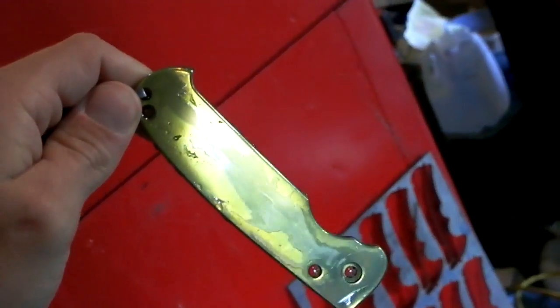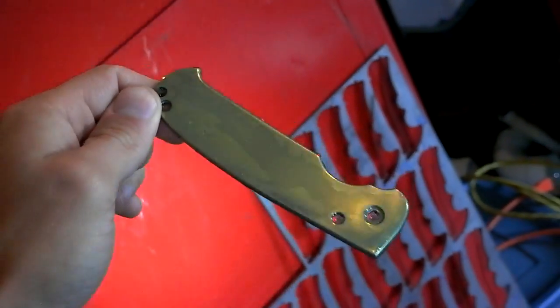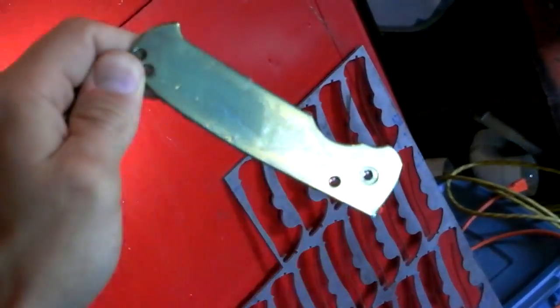Anodized titanium looks different in every light. Indoors with a flashlight it looks like one thing. Outdoors looks like another thing. But let's take it outside.